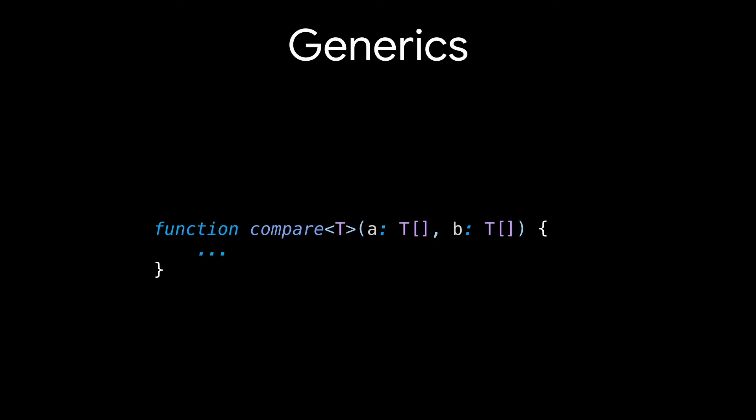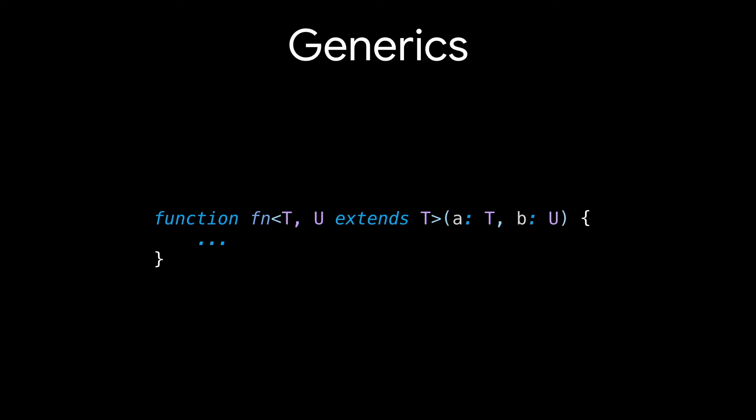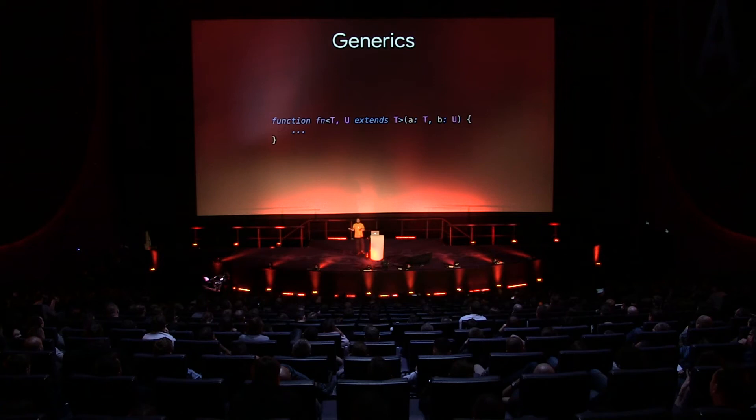A and B don't have to be exactly T — they could be a more complex type that uses T, like an array. TypeScript also has the extends keyword, where U extends T means U would be a more specific subtype of T, allowing you to tie A and B together in specific ways.